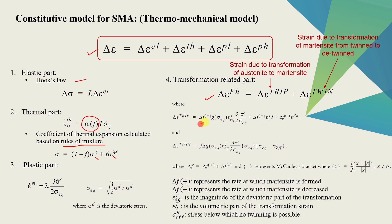I know these equations look a little bit daunting, but it's quite easy to understand. Over here, this delta F positive represents the rate at which martensite is formed. And delta F negative is the rate at which martensite is decreased. This epsilon eq and epsilon v are deviatoric and volumetric part. And sigma effective, it's some critical stress below which twinning is not possible. But the main part over here is this G function.